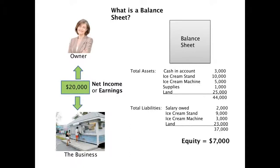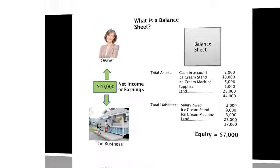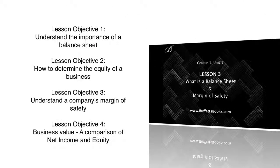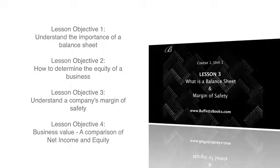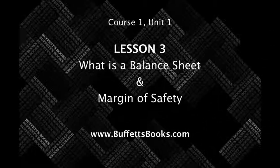So the four things we learned in this lesson: we learned about understanding the importance of a balance sheet, how to determine the equity of a business, understanding a company's margin of safety, and understanding the business value comparison of net income to equity. I hope you learned a lot, and I'll see you in the next lesson.